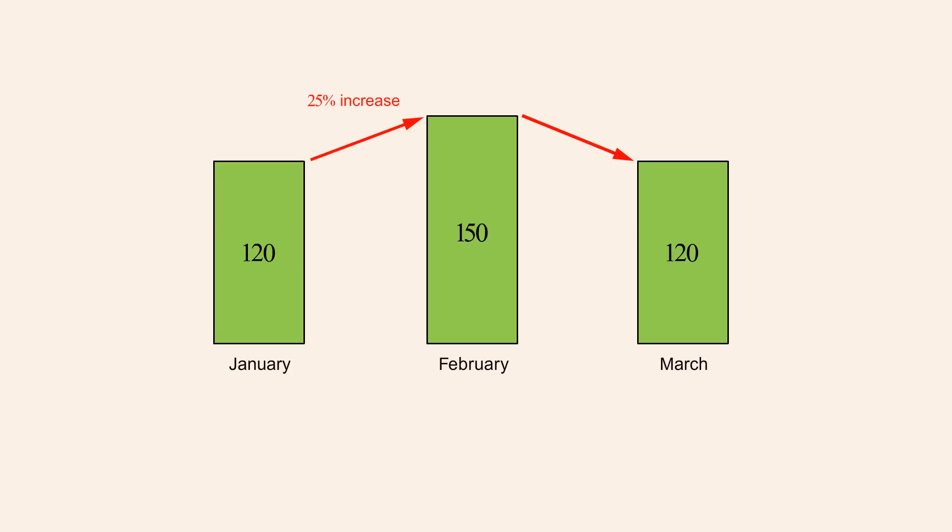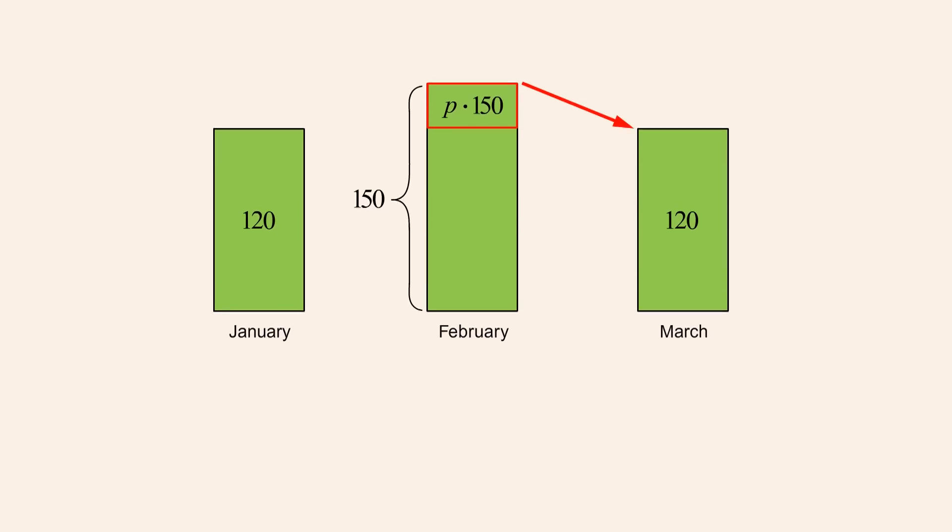We want to find the percentage of accidents in February which did not occur in March. If we call the decimal equivalent of that percentage p, then p times 150 is the difference in accidents between February and March. We can now write an equation which says that the number of accidents in March equals the number of accidents in February, minus the change in accidents p times 150, or 150p.